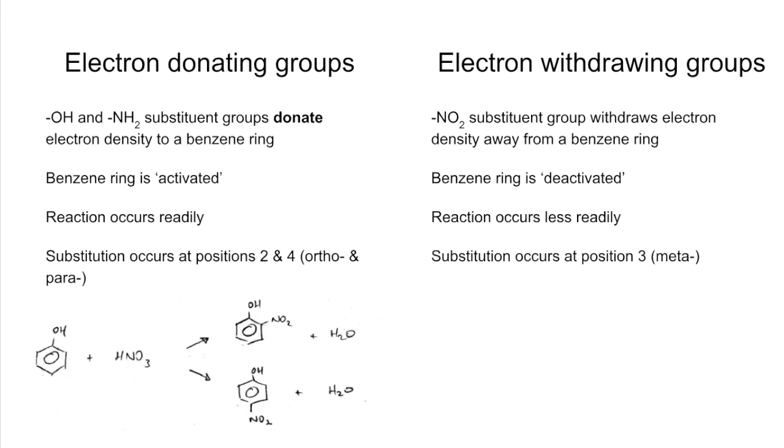For electron withdrawing groups, substitution occurs at position 3, also known as the meta position. For example, nitrobenzene reacts with bromine. We're going to need an AlBr3 or FeBr3 catalyst because of the deactivation of the benzene ring. The product is going to be 3-bromonitrobenzene and HBr.